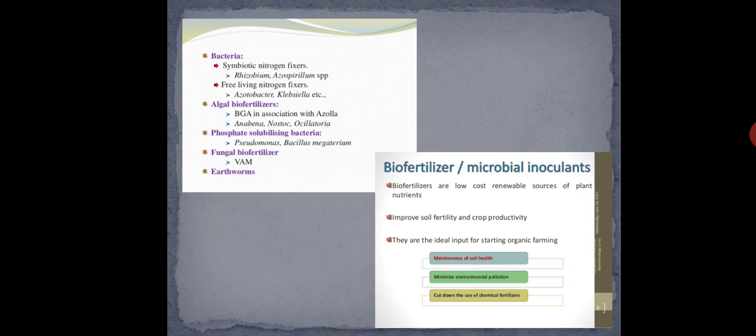Next is fungal biofertilizer, with the example VAM — Vesicular Arbuscular Mycorrhiza. Mycorrhiza is a fungus. VAM is a fungus with the ability to dissolve phosphate found in the soil; once it dissolves in the soil it promotes plant growth. It is the product of the association between the fungus and the plant root.